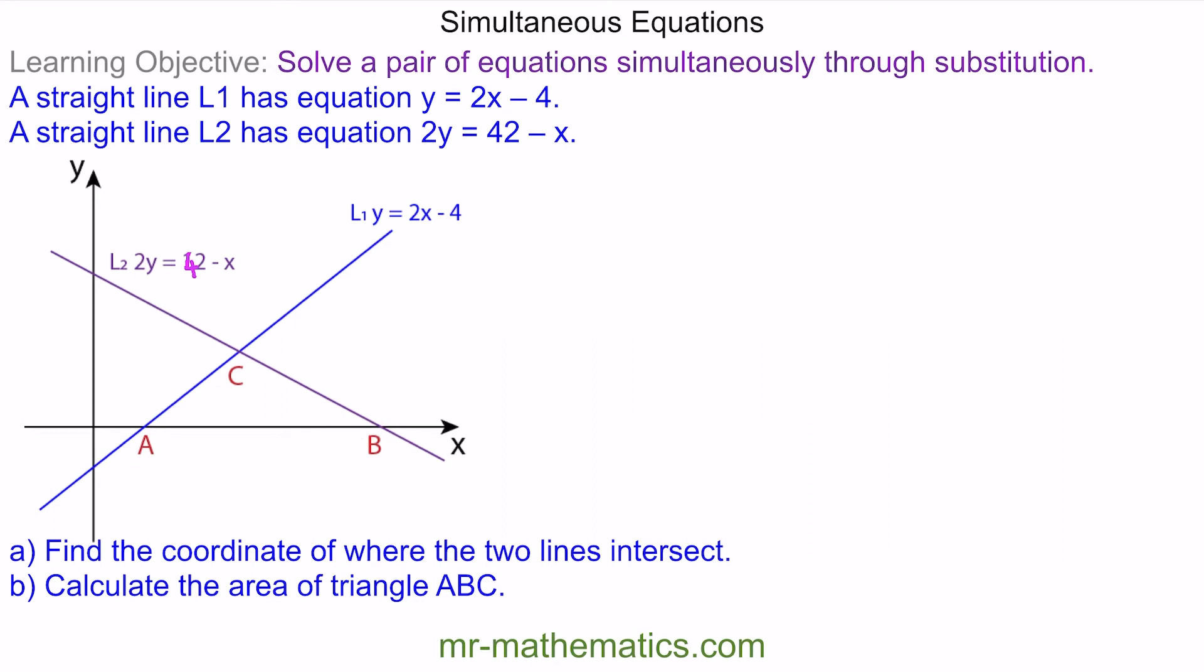We'll begin by substituting this value of y here into this equation here. So we have two lots of y, which is 2x minus 4, equals 42 minus x. We'll expand the brackets.